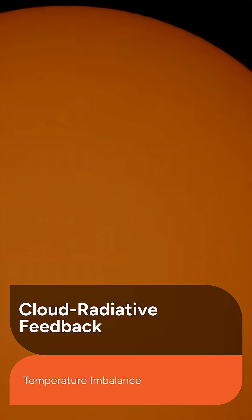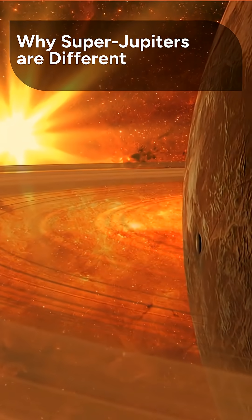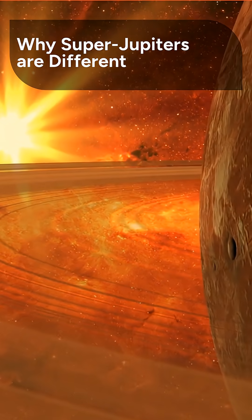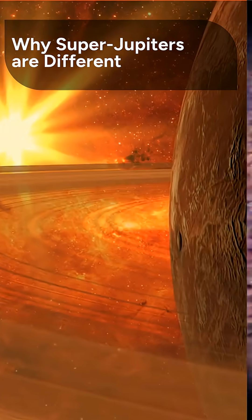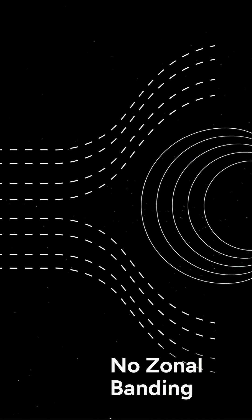So why do these super-Jupiters behave so differently from our familiar gas giant, Jupiter? The answer lies in their atmospheres being much hotter and responding far more strongly to radiation than Jupiter's cooler atmosphere. This rapid, strong response creates the large-scale equatorial waves, actively preventing the formation of Jupiter-like zonal banding, or rings.